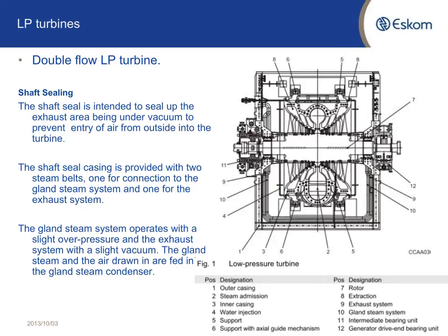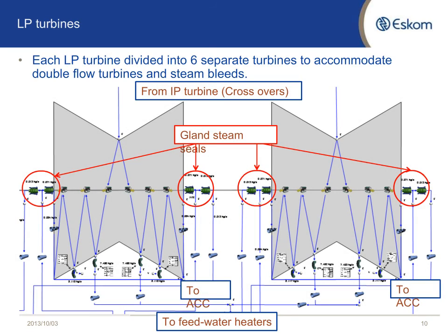For the LP turbine, the shaft seals are intended to seal up the exhaust area, but in this case it's under vacuum, so here you want to prevent air from going inside the turbine — whereas on the other turbines you prevent steam from going out into the turbine hall. The shaft seal casing is provided with two steam belts: one for connection to the gland steam system and the other for the exhaust system. Because of the four bleeding points, I had to make six separate turbine sections per LP turbine, plus two chambers for the gland steam seals.